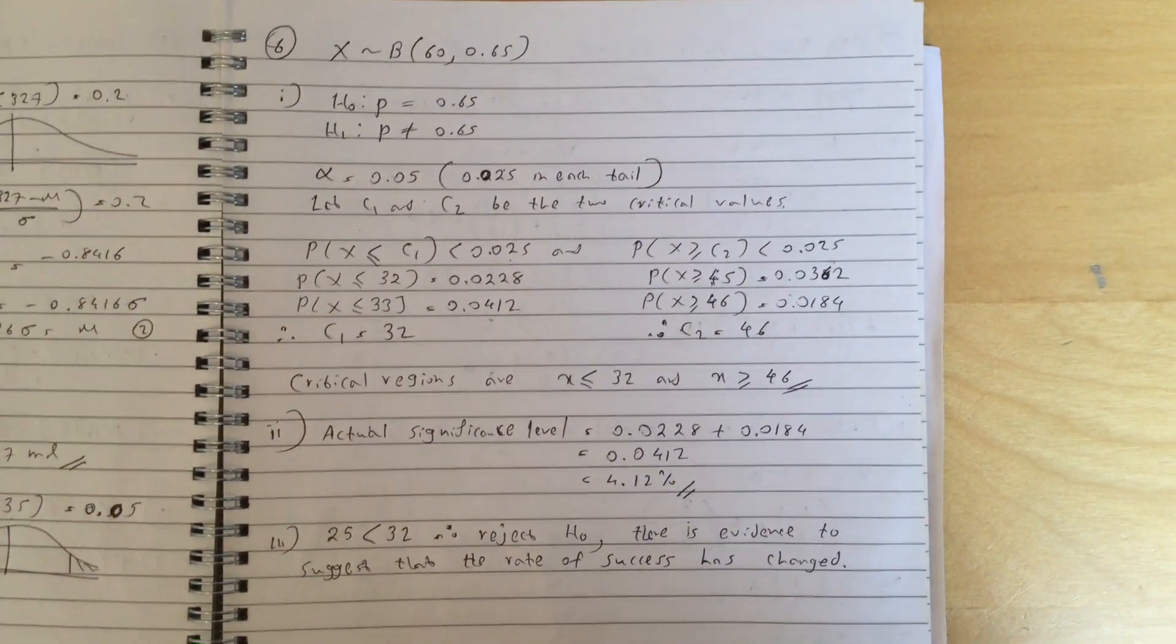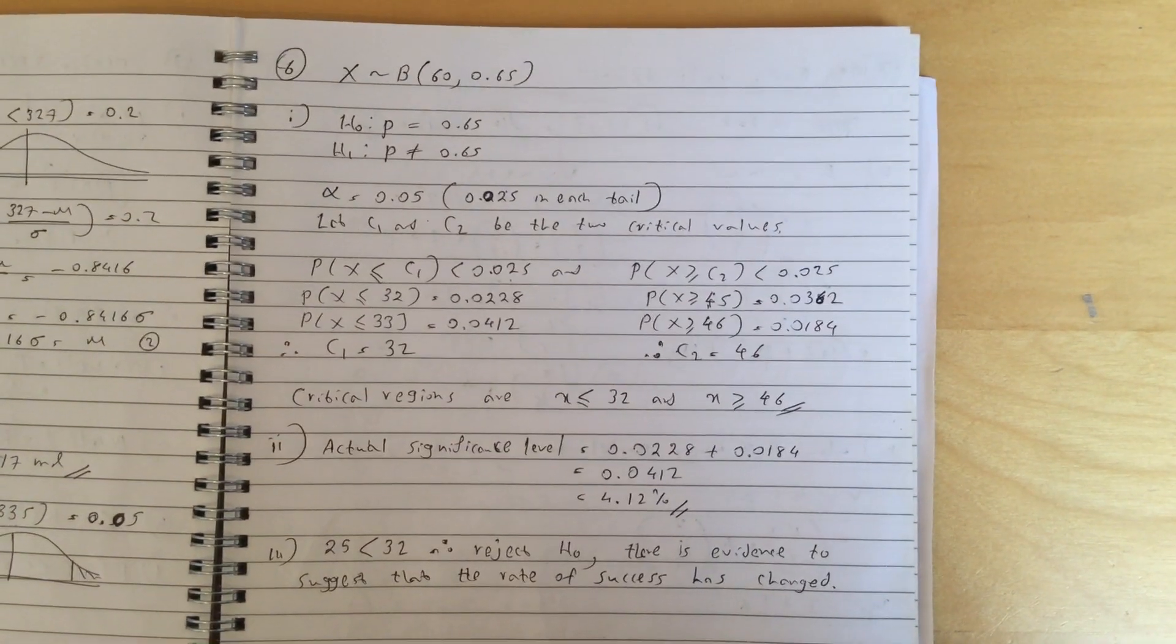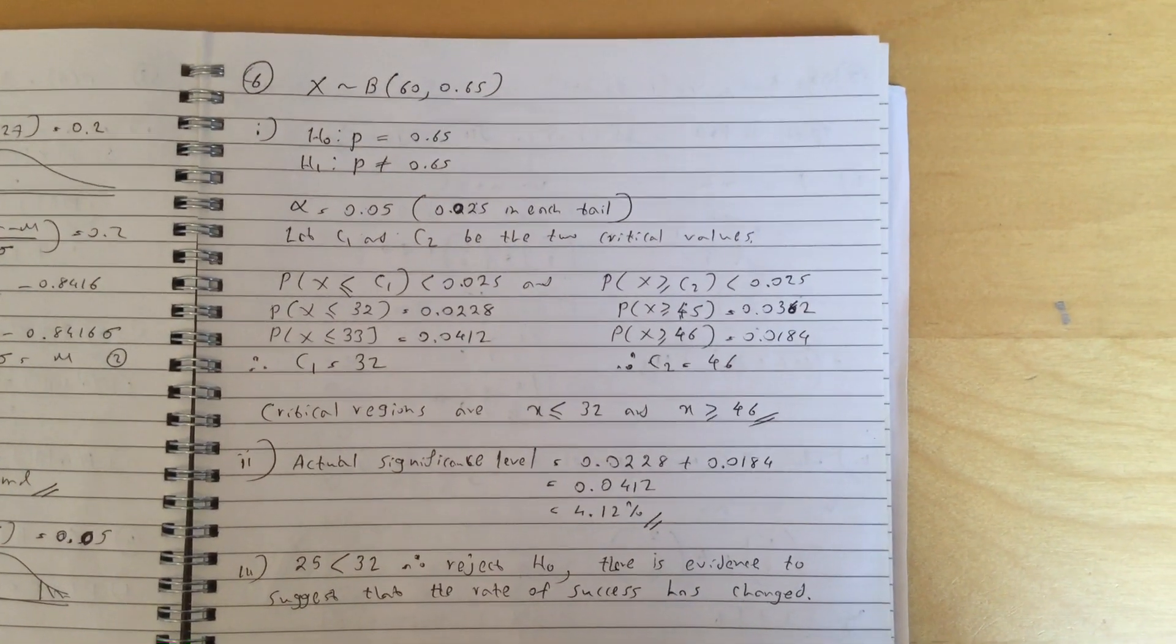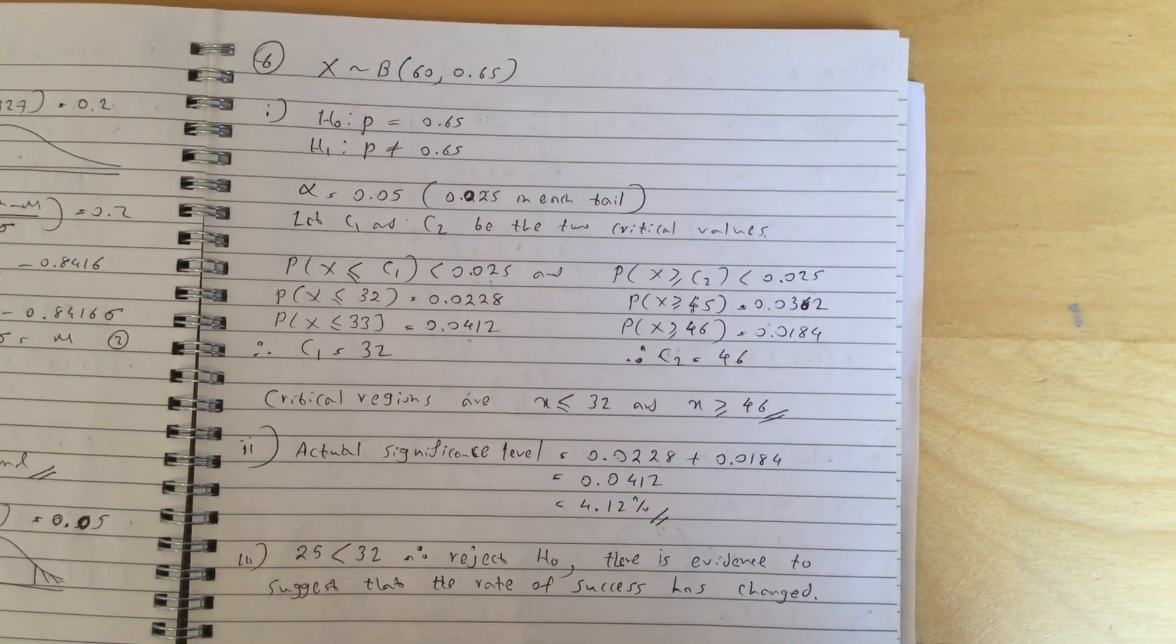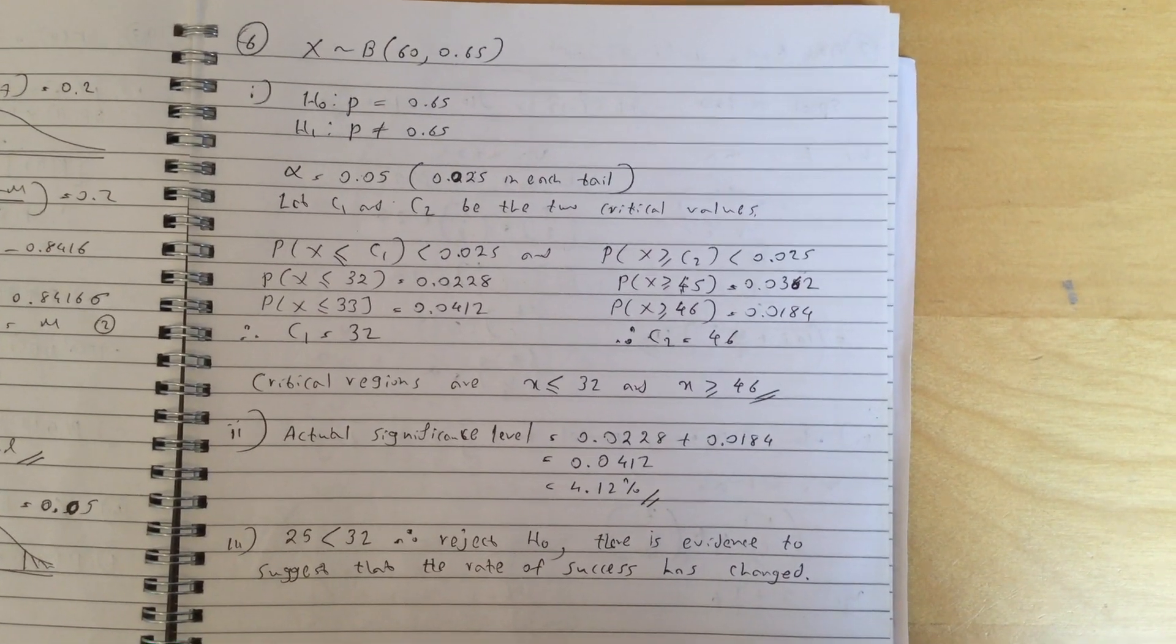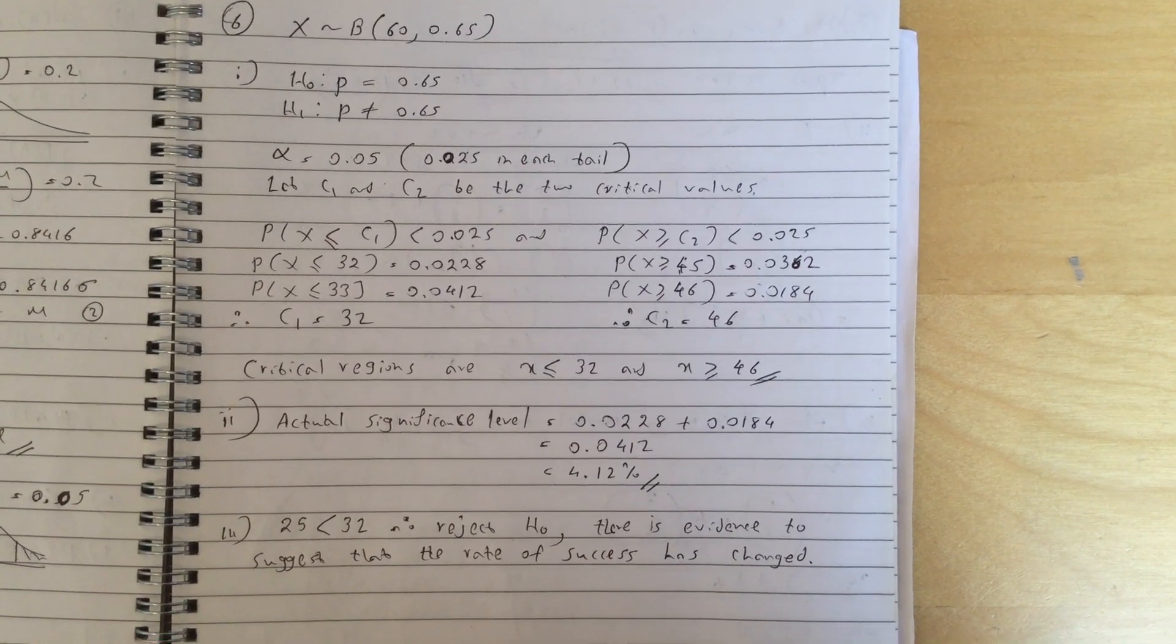Question 6, so first part, you go binomial distribution with n equals 60 and p equals 0.65. Write the hypothesis and work out the critical regions to be x less than or equal to 32 or x less than or equal to 46.